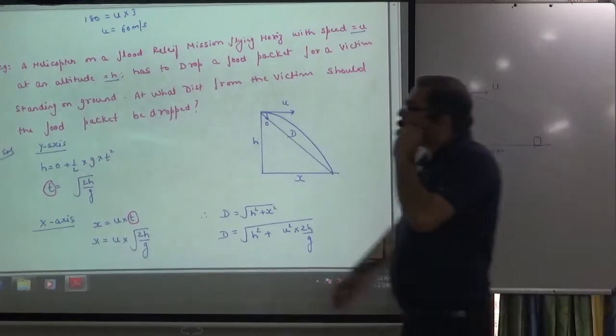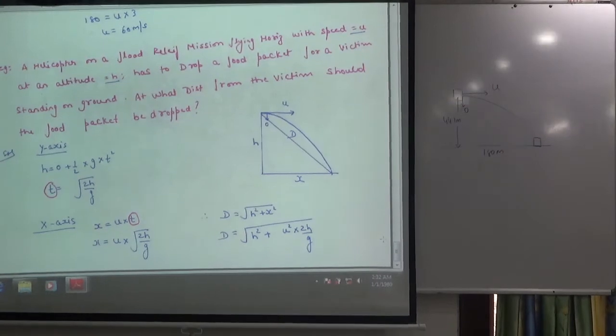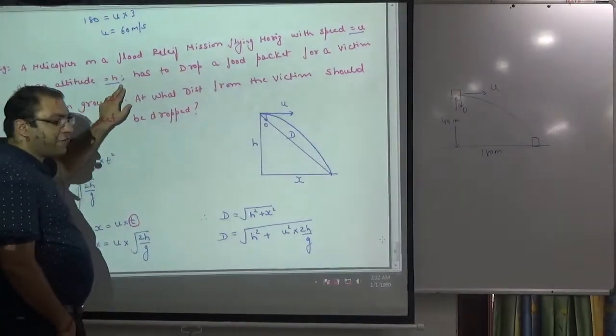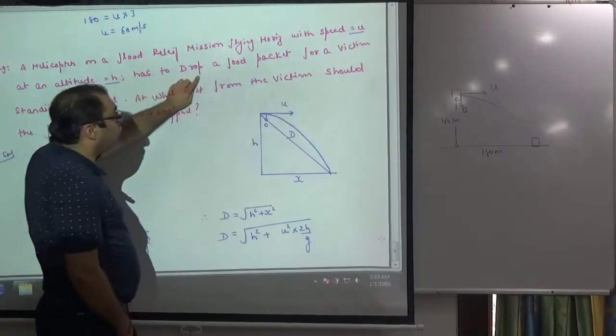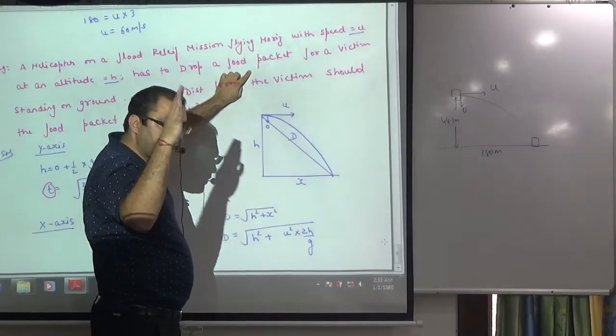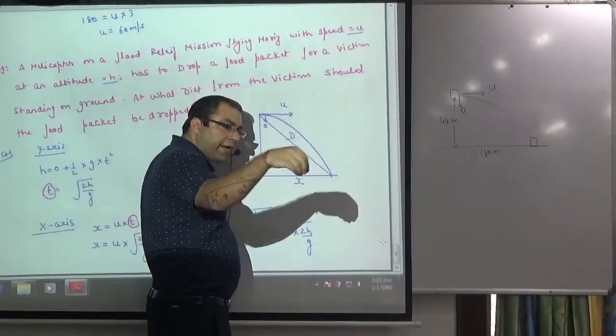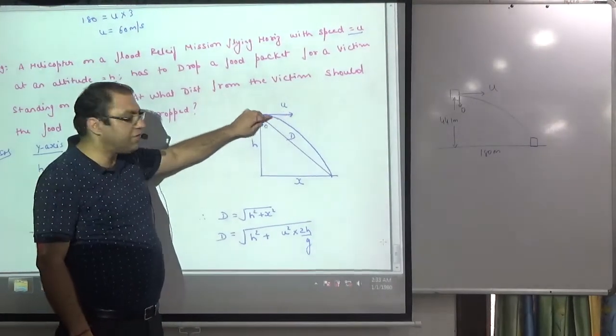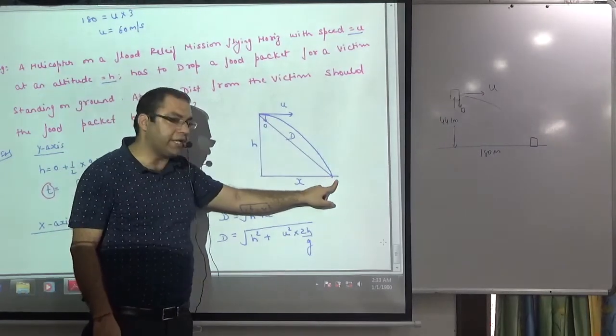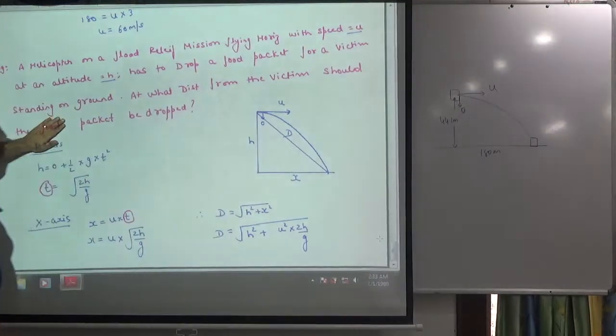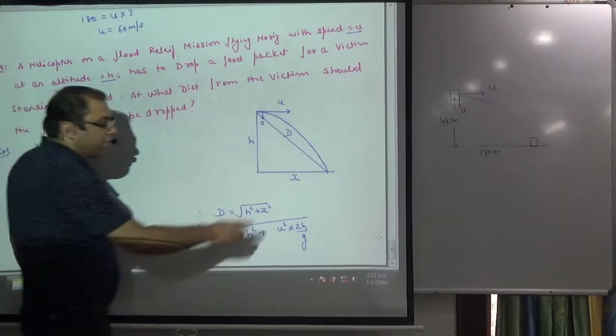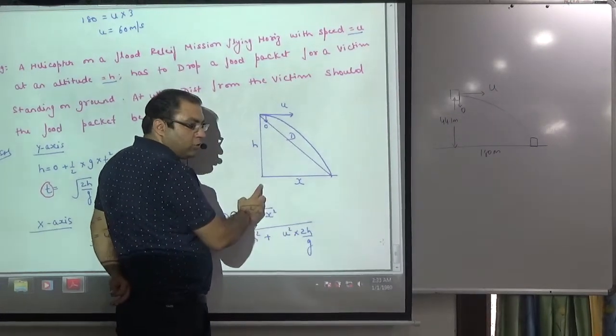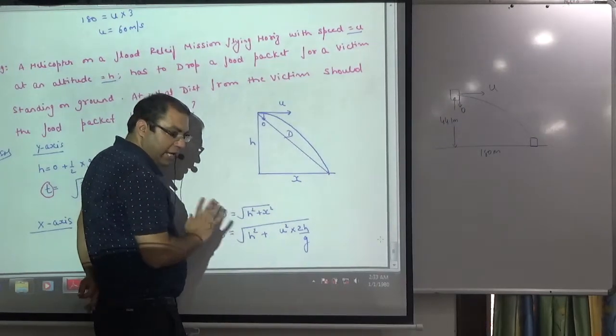The next question is, a helicopter on a flood relief mission flying horizontally with a speed of u at an altitude of h has to drop a food packet. If the helicopter's speed is u, the food packet when dropped has speed u in the same direction. This is u speed and the initial vertical velocity of the food packet is zero. Ultimately it will fall down from the gravity effect. At what distance from the victim should the food packet be dropped? So the victim is where the food packet needs to go, so how far before should the packet be dropped? If I tell you, d² = h² + x². d can be calculated. In the question you need to find x.